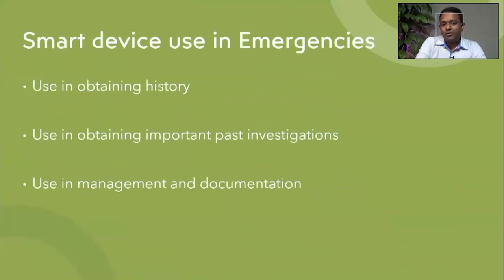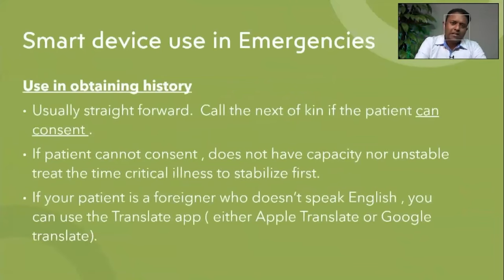So how can you use your smart device in emergencies? You can use them in obtaining history, getting past medical investigations, and in management and documentation. In an emergency when the patient doesn't have capacity or is unconscious, you can call the next of kin or an emergency contact on the phone to get the history from them.